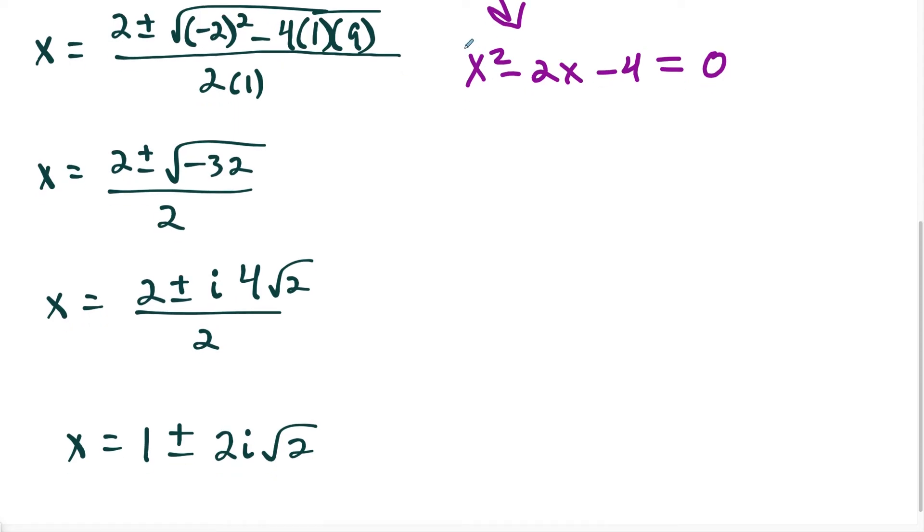So once again, here, this isn't going to factor nicely. Like notice, I just jumped into the quadratic formula for both of these, because I don't have any two rational numbers that the product is negative 4 and the sum is negative 2. So what we have to do here is we're going to use the quadratic formula again.